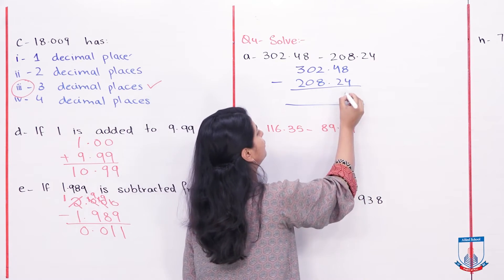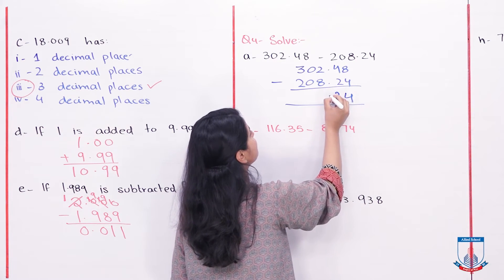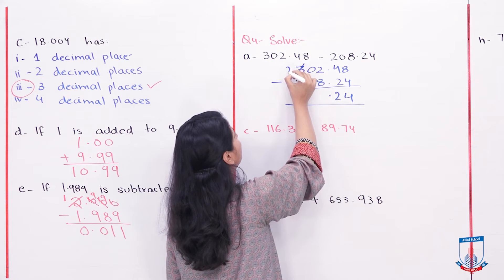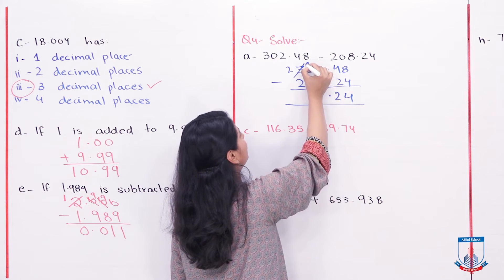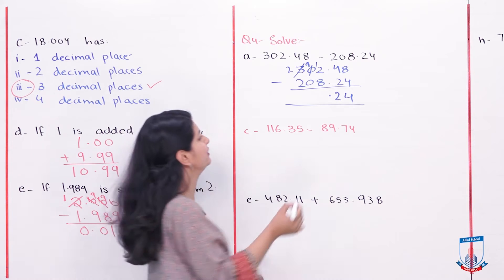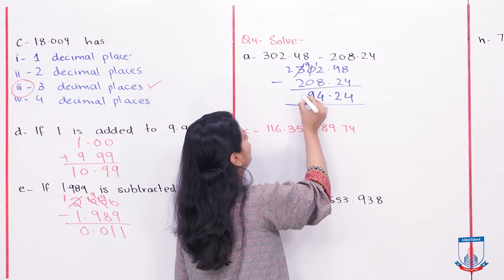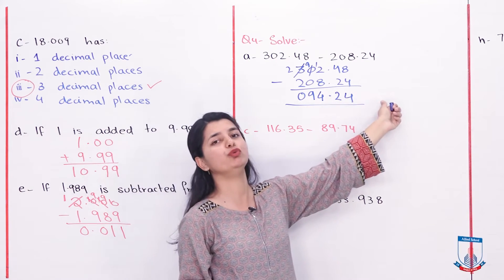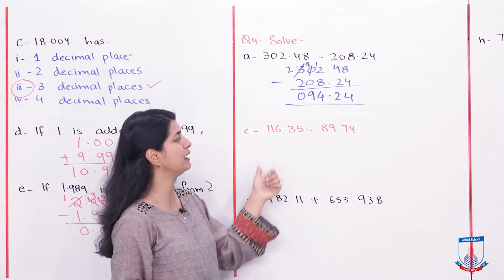Now with 2, I can't take 8 to minus here, I will borrow from here. This is 2 and this is 10. Now with 10, this is 9 and this is 12. 12 minus 8 is 4. 9 minus 0 is 9. 2 minus 2 is 0. So the answer is 94.24. You will write your answer in your notebooks. This way B part is conducted. Now let's look at C part.